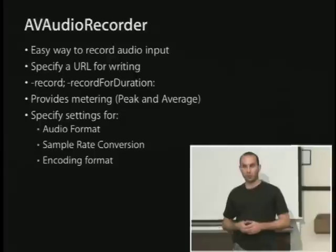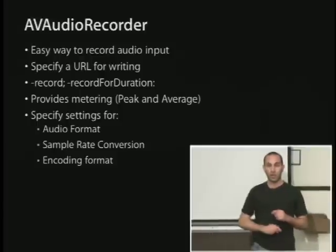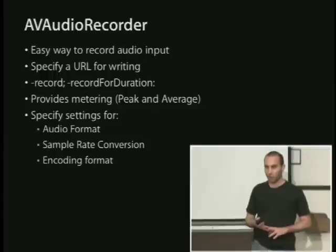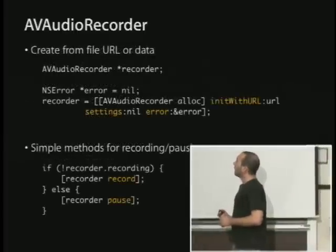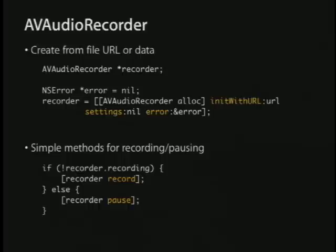AV Audio Recorder supports sample rate and format conversion. You initialize it with a destination URL and optional settings dictionary containing properties like sample rate and format compression. You can record and pause, and as the queue fills up it writes to disk.